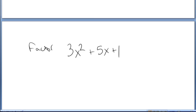I want to factor the trinomial 3x squared plus 5x plus 1. Our first step is always to try to factor out any greatest common factor of the three terms, and I see here that there is nothing in common between the three terms except 1.